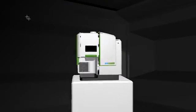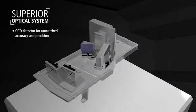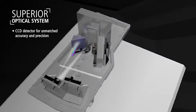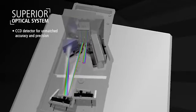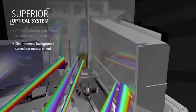An ICP system is incomplete without advanced optics. Avio 200's CCD detector is engineered to measure the entire wavelength range around the emission line of interest, while simultaneously providing background correction that can further enhance sensitivity.